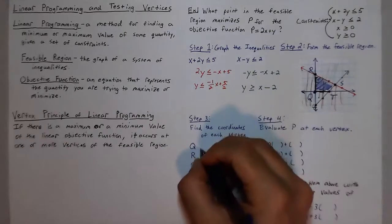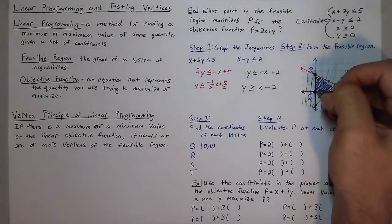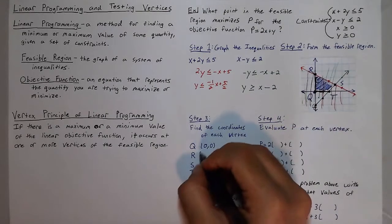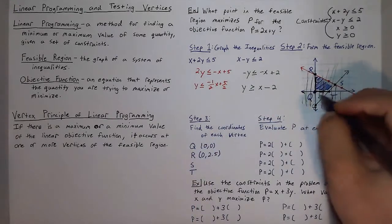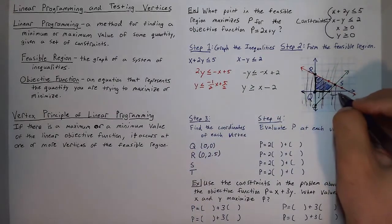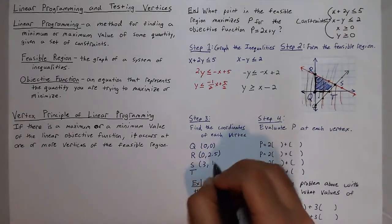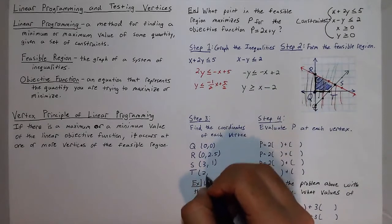Now, the bottom left corner is our origin, so that's at the point zero, zero. r is at the point zero, five halves, or zero, 2.5. s is at the point three, one. So three, one. And t is at the point two, zero.